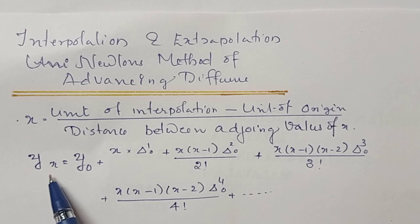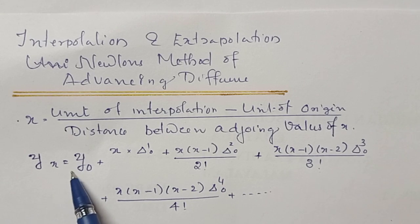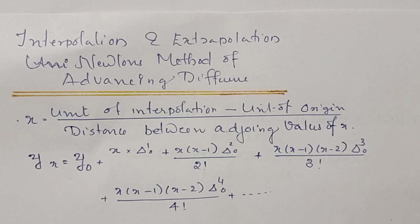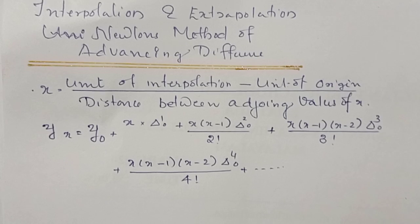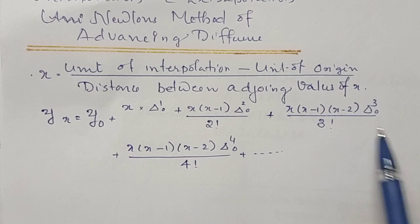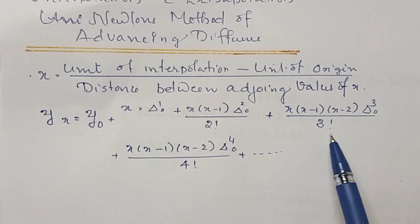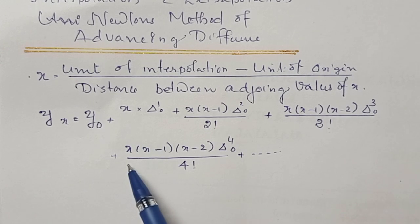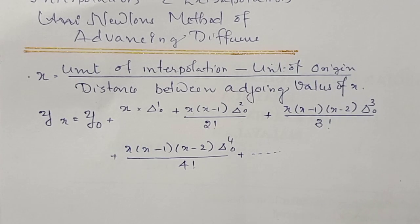The formula is: x equals y₀ plus x into Δ¹₀ plus x(x-1) into Δ²₀ divided by 2!, plus x(x-1)(x-2) Δ³₀ divided by 3!, plus x(x-1)(x-2) into Δ⁴₀ divided by 4 factorial.